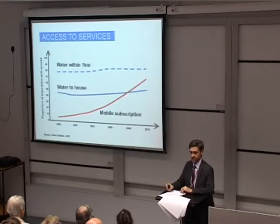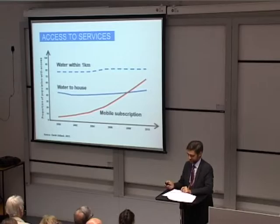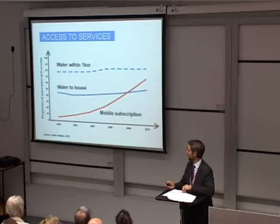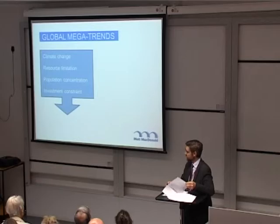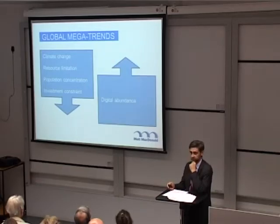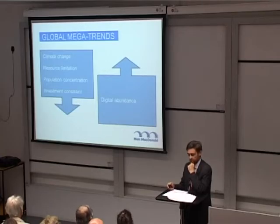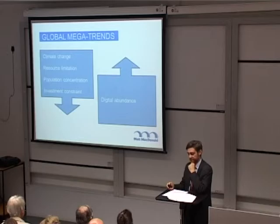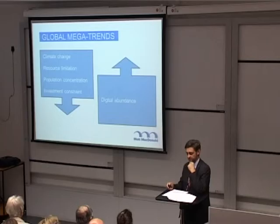Enough of the doom and gloom — there must be some good news. While there are these negative megatrends going downward, maybe there's one going the other way, and that's to do with digital abundance. The rapid and ongoing reduction in the unit cost of collecting, communicating, processing and storing information is leading to this state of digital abundance, and what we're seeing as a result is an information explosion — a rapid increase in the volume of published data and information.